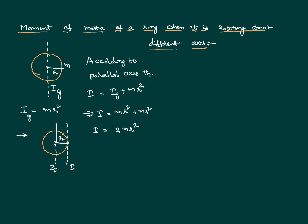It is clear that whenever the axis changes, as the distance of the particles changes, the moment of inertia of a given body also changes. At a broader level, we can express the moment of inertia as the product of the mass of the body with the square of the radius of gyration, where radius of gyration is the effective distance of the entire body from the axis of rotation. So we can write mk² = 2mr², which implies k = √2 · r.